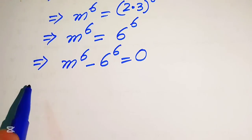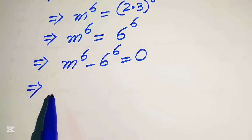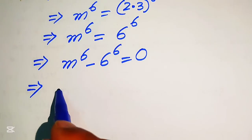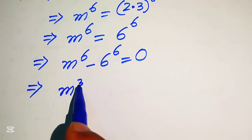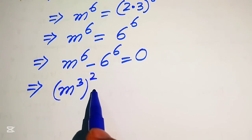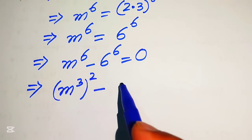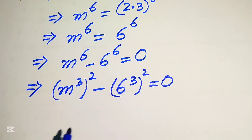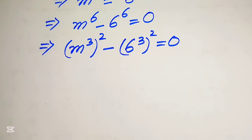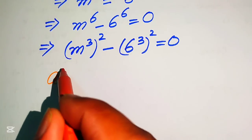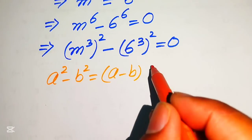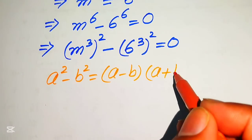We rewrite this equation in a new form. We write m to the power of 6 as m cubed, whole squared, minus 6 to the power of 6 as 6 cubed, whole squared, and this equals to 0. Now we apply the algebraic formula: a squared minus b squared equals a minus b times a plus b.